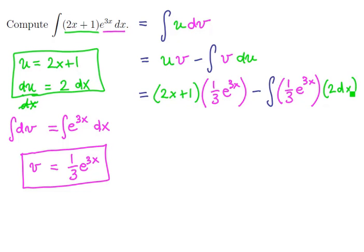So let's clean this up and see what we've got here. We've got 1 third times 2x plus 1 quantity times e to the 3x. And we're going to be subtracting the integral of 2 thirds e to the 3x dx.